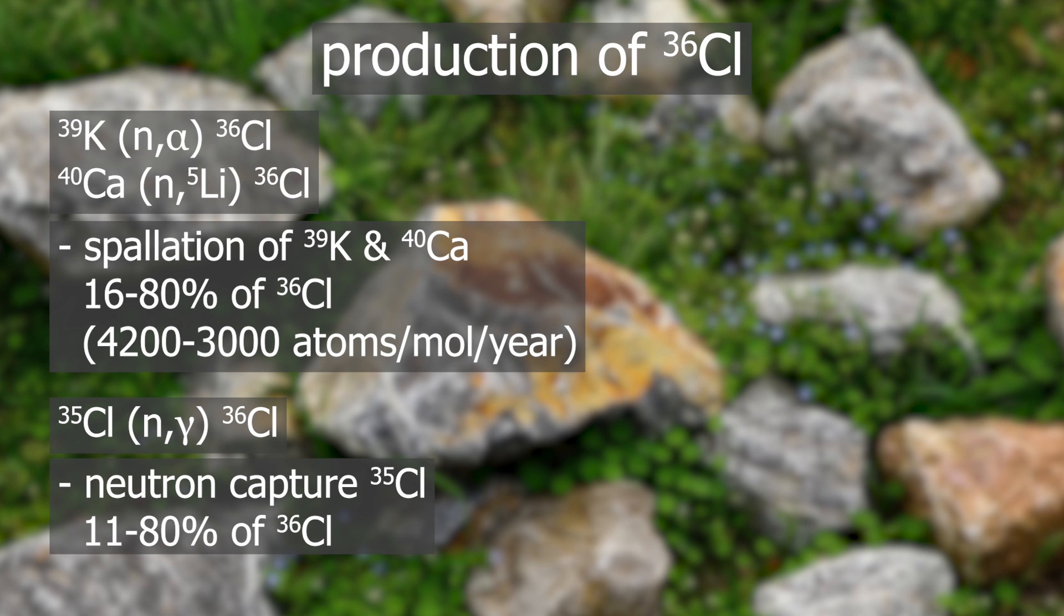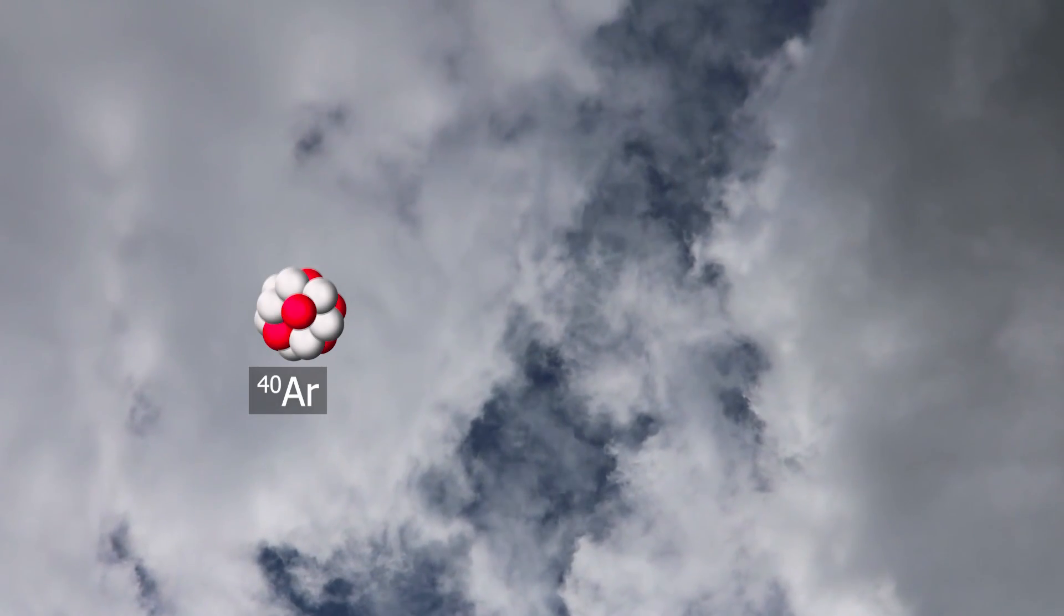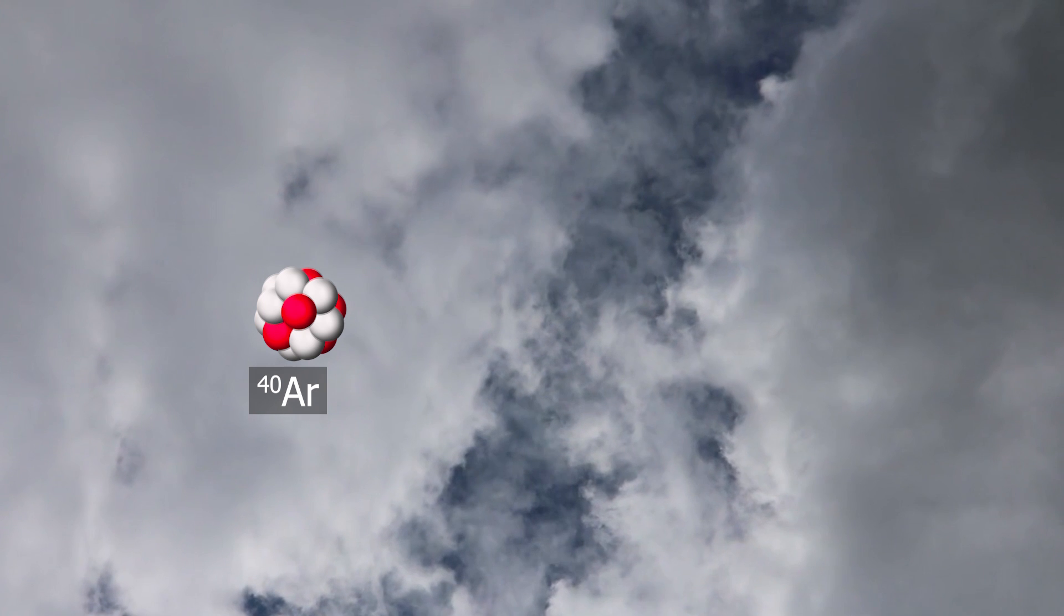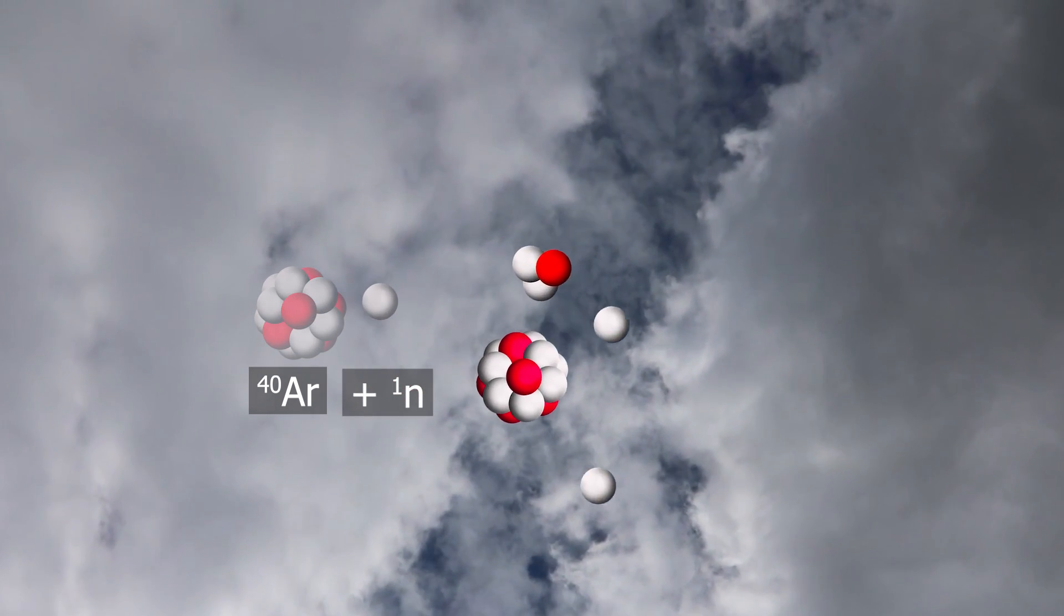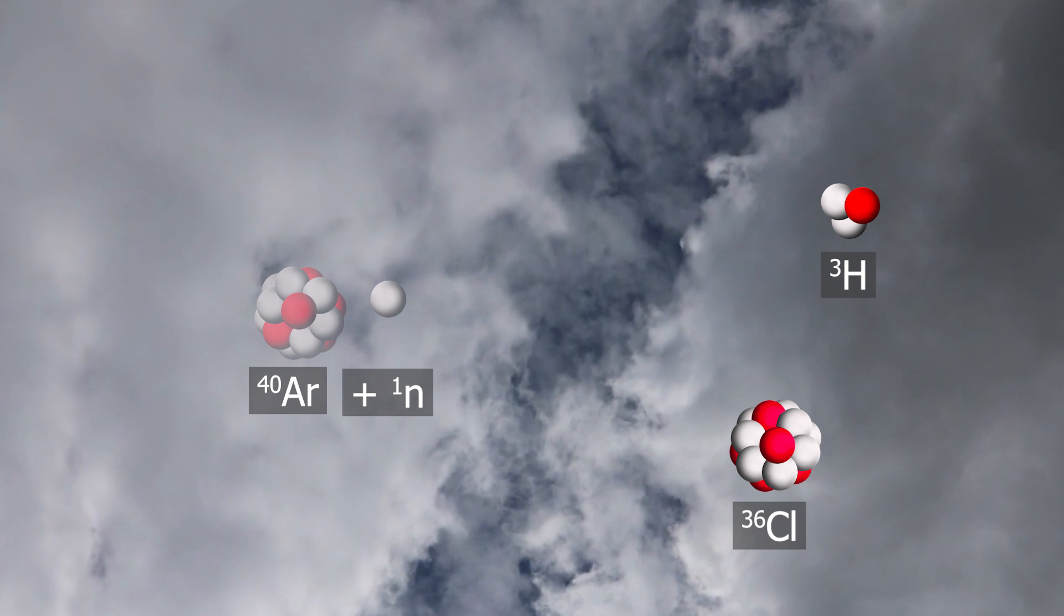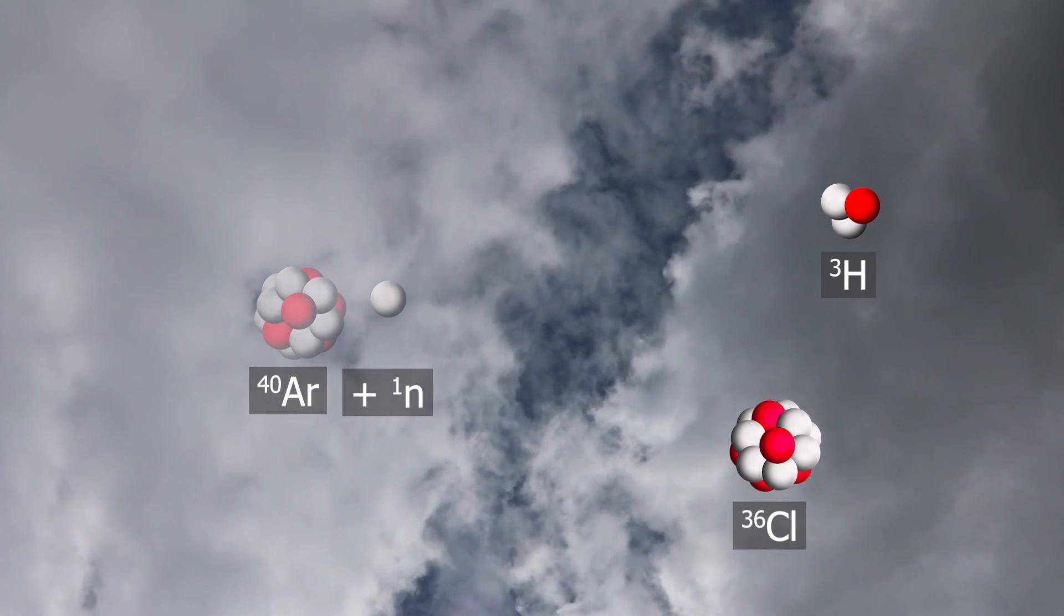Before I delve deeper into the last niche case on how Chlorine-36 can be produced, I wanted to say a few words about interference factors. Meteoric Chlorine-36 can also be produced by spallation of Argon-40. So Chlorine-36 is formed from the air and remains in the air, eventually settling on the surface of the sample.